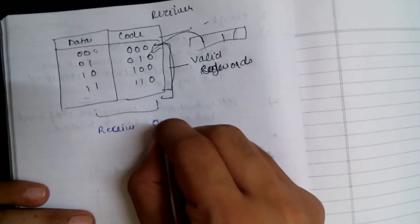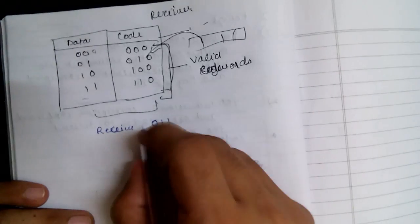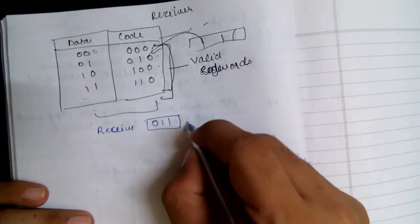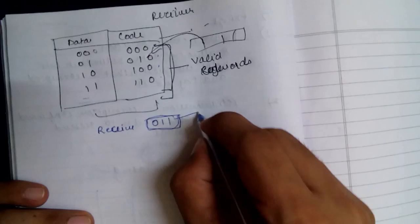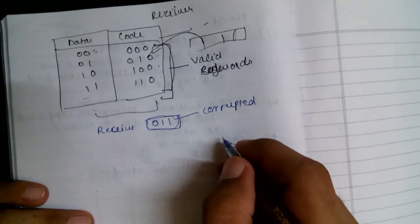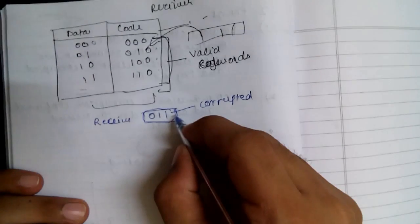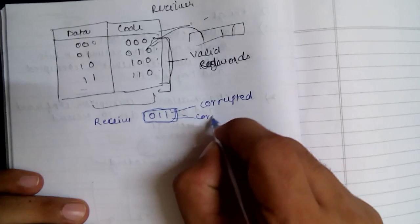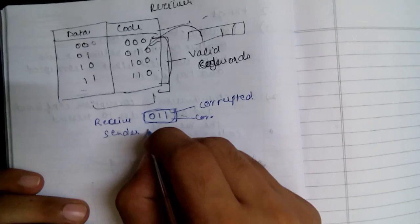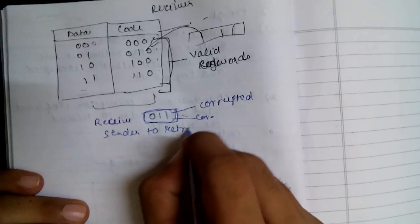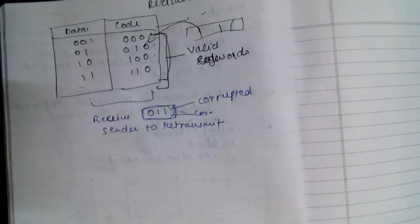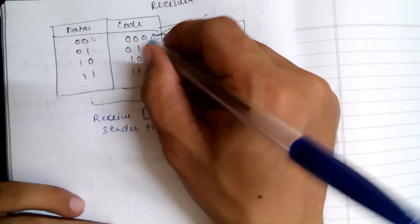If the receiver receives a code word like 011 and 011 is not in the valid code word table, we can easily say that the code word received is corrupted. We can then apply various correction methods or ask the sender to retransmit the message. This is the way we detect that an error has occurred.